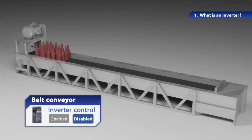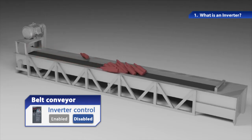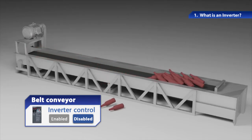What if the inverter is not installed? When the motor is switched on, the conveyor starts running abruptly, and the works fall over and drop.